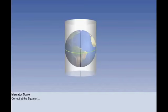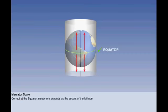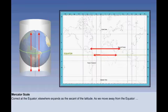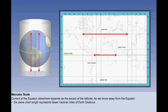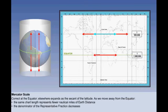In our study of the general properties of the Mercator projection, we noted that scale is correct at the equator and elsewhere expands as the secant of the latitude. As we move away from the equator, the scale expands. This means that the same number of centimetres of chart length represents fewer nautical miles of earth distance, and the denominator of the representative fraction decreases.